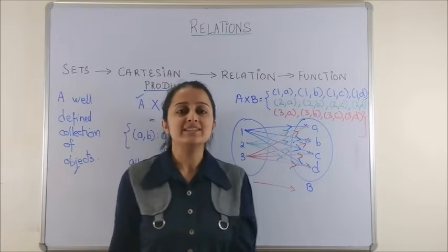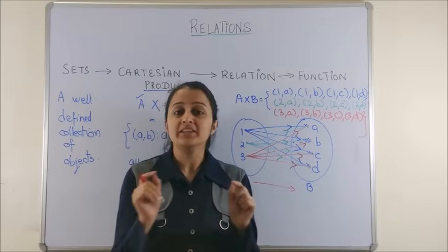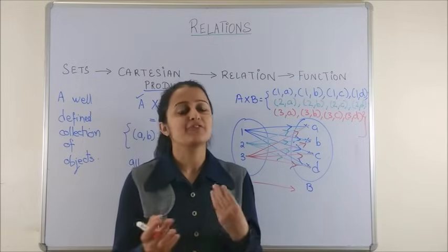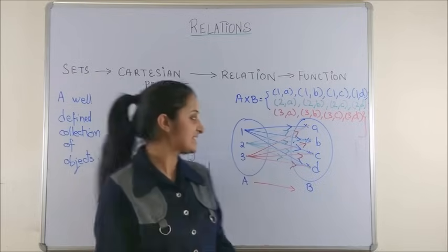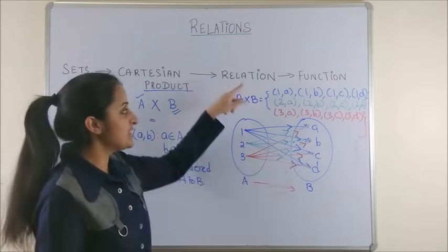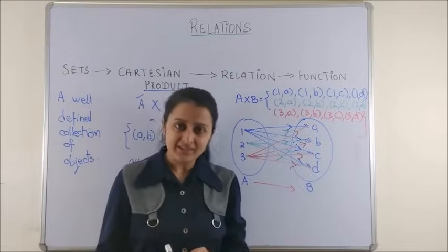Please note, as you can clearly see, since the order in the ordered pair is important, so of course your A cross B and B cross A would mean two different things. Now, once we have the knowledge of this, let's extend this to a relation.